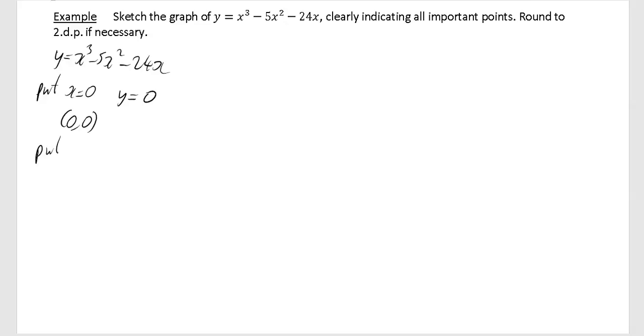Next we're going to find out where it crosses the x-axis. So we're going to put y equal to 0. That means 0 equals x cubed minus 5x squared minus 24x. We factorize this as best as we can. We're going to pull an x out first, giving you x times (x squared minus 5x minus 24).